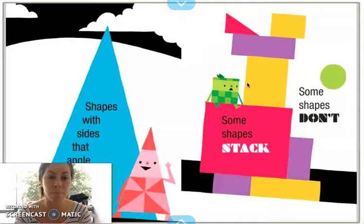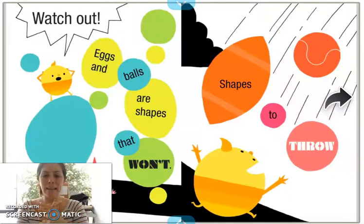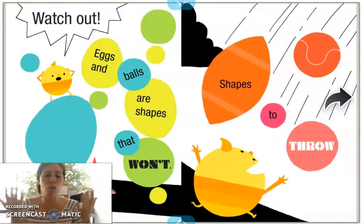Some shapes, like this green circle, don't. Stack means putting them one on top of the other. Watch out! Eggs and balls are shapes that won't.